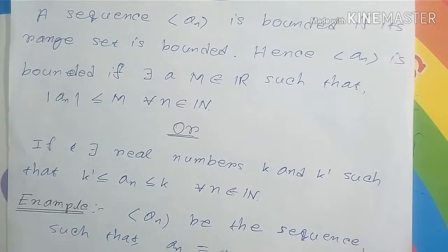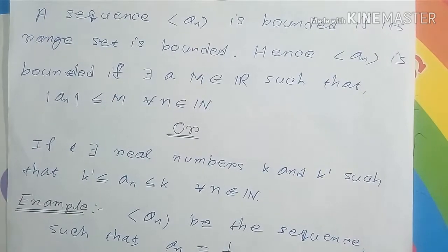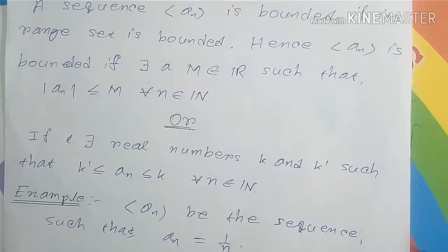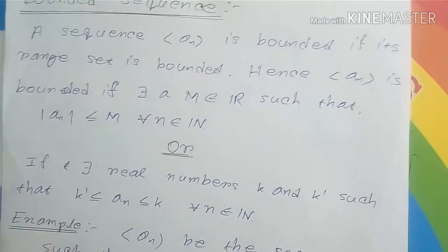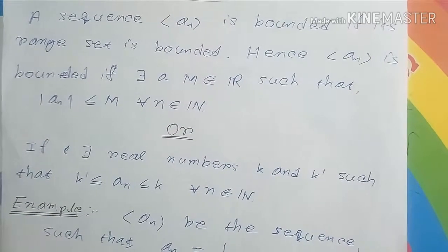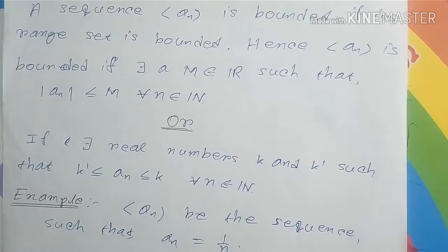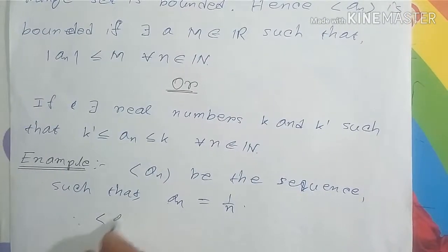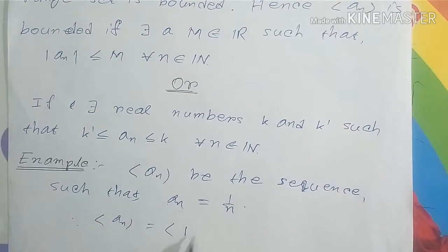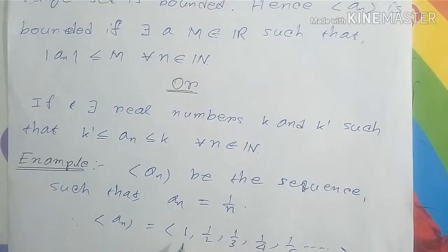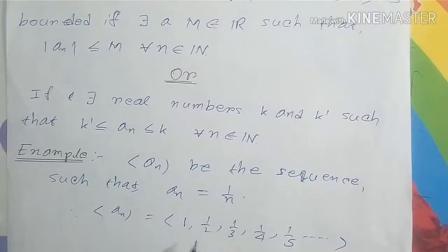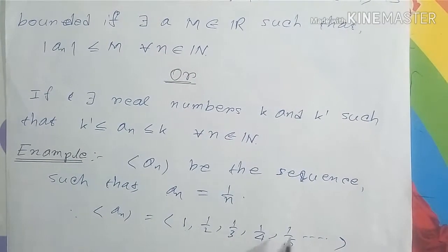According to the definition, a sequence a_n is bounded if its range set is bounded. For the sequence a_n = 1/n, the terms are: 1, 1/2, 1/3, 1/4, 1/5, and so on. Its range set contains the elements 1, 1/2, 1/3, 1/4, 1/5, and so on.